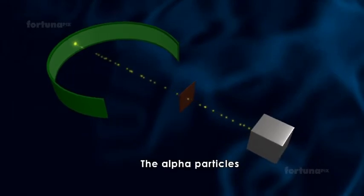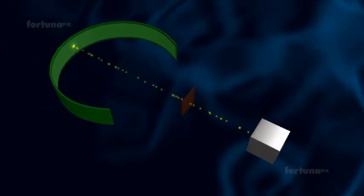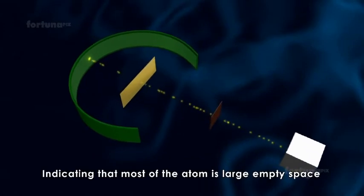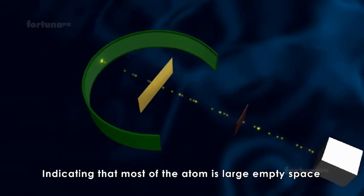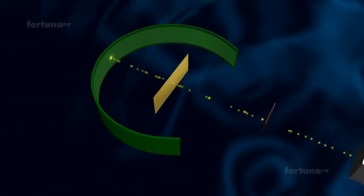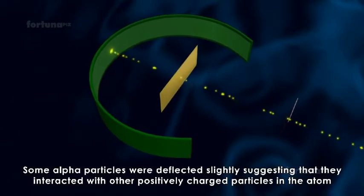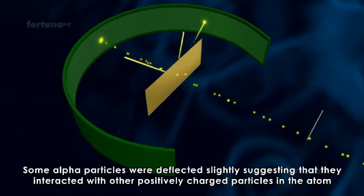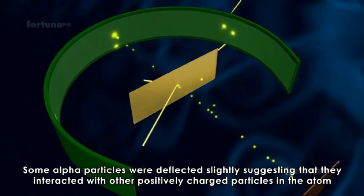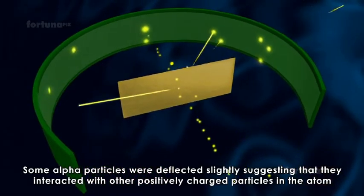When the alpha particles bombarded the gold foil, they passed straight through the foil, indicating that most of the atom is large empty space. Some alpha particles were deflected slightly, suggesting that they interacted with other positively charged particles in the atom.